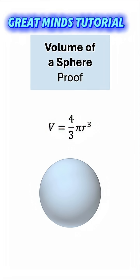We know that the volume of a sphere is 4 over 3 pi times its radius cubed. But where does this come from? Let's prove it.